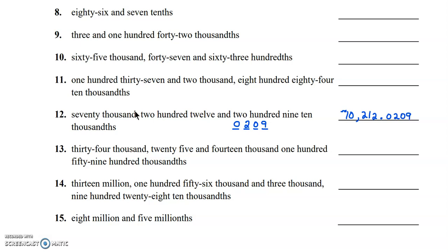Number 15: we have 8 million and 5 millionths. We're going to make 8 million on the whole number side — that's going to be 6 zeros. The thousands period and the ones period have the zeros.